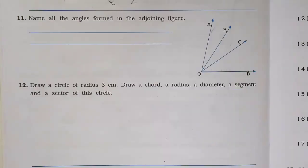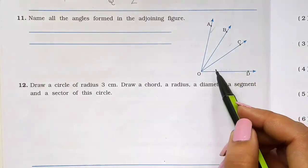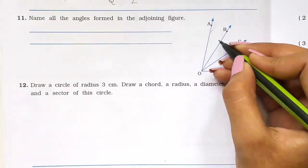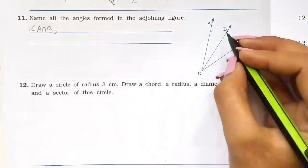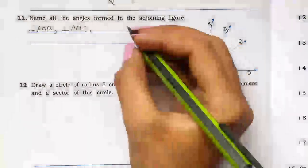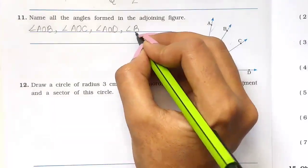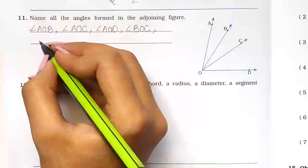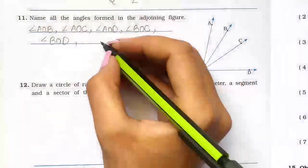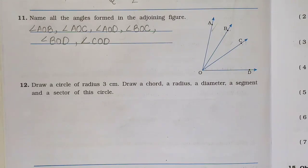Now let's look at question number 11: Name all the angles formed in the adjoining figure. We start with A. Angle AOB, then angle AOC, then angle AOD. Then starting from B: angle BOC, then angle BOD. Then from C: angle COD. So these are all the angles in the figure.